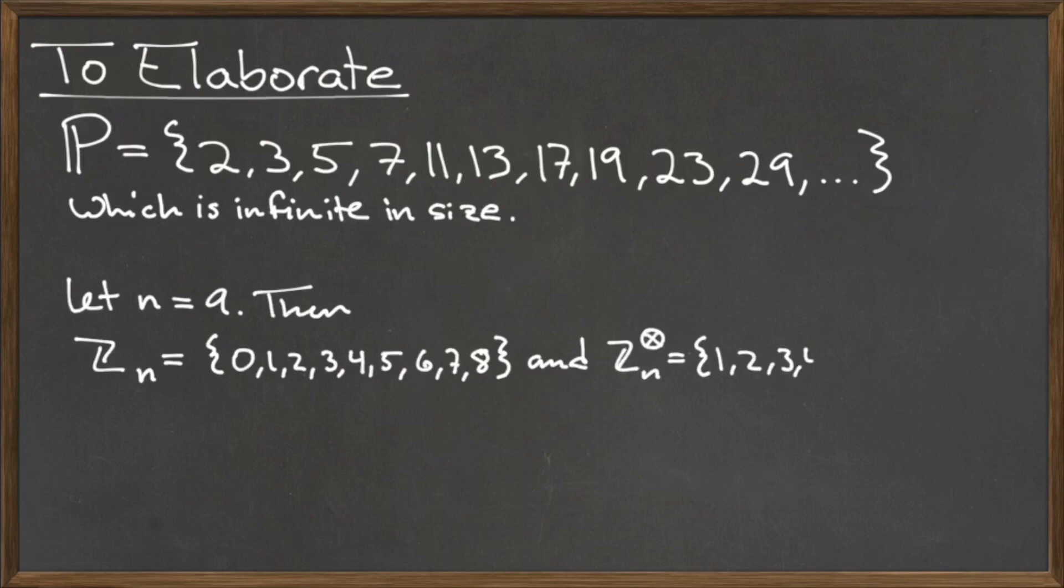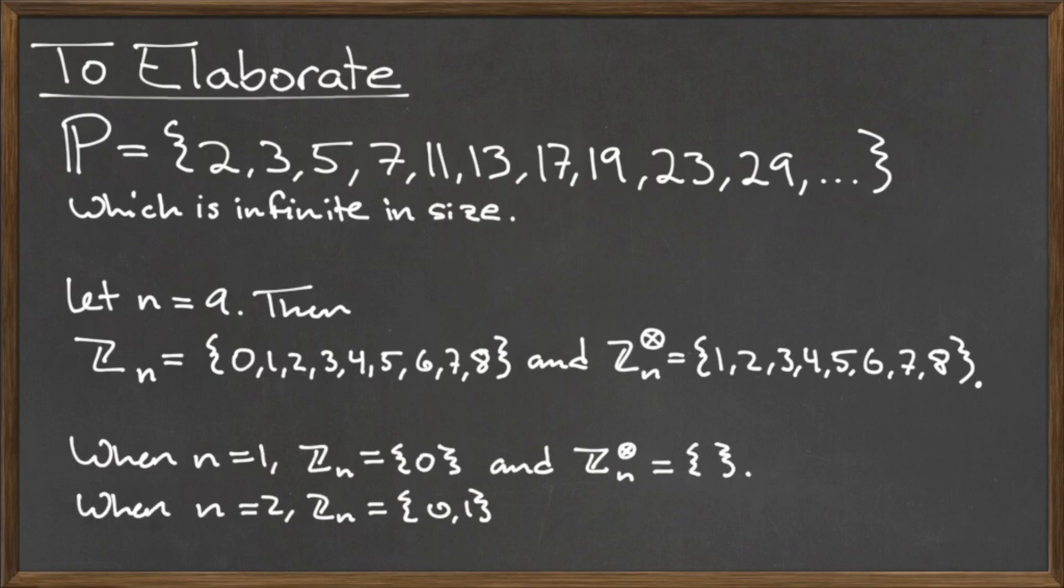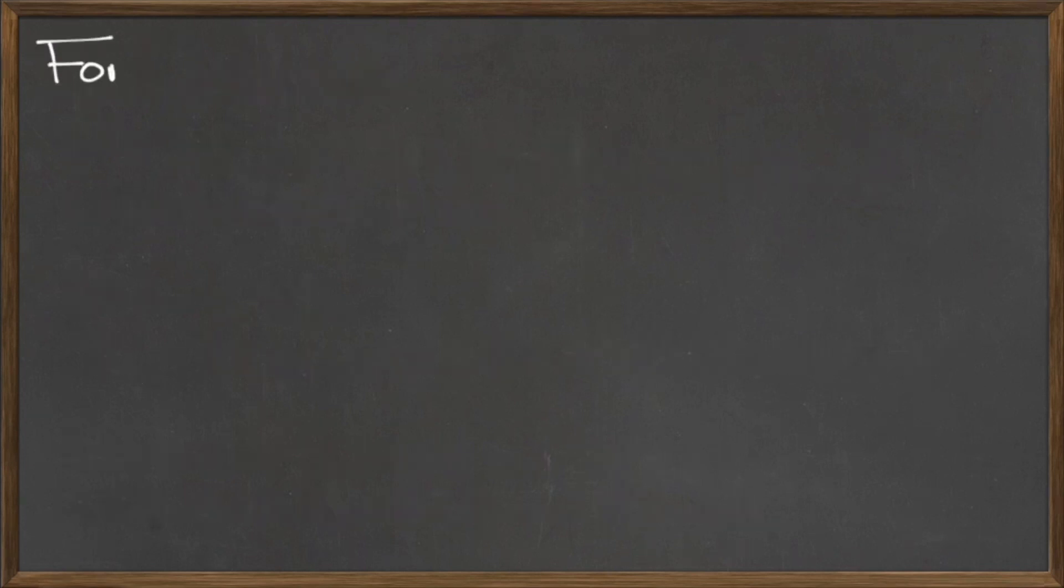The final examples illustrate the roster forms for Zn and Zn without 0 for different natural numbers N. The final topic for this video is how to formulate a statement with sets.